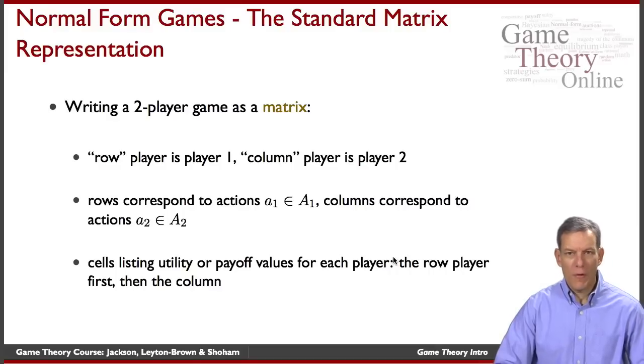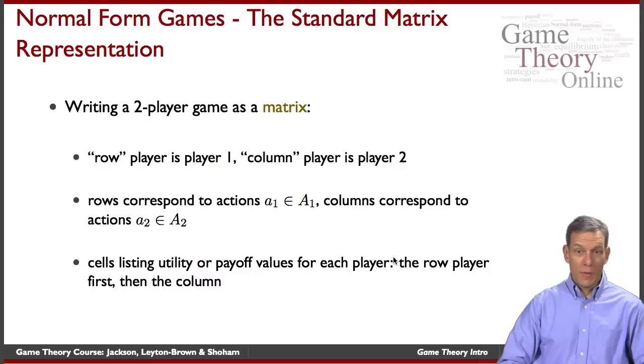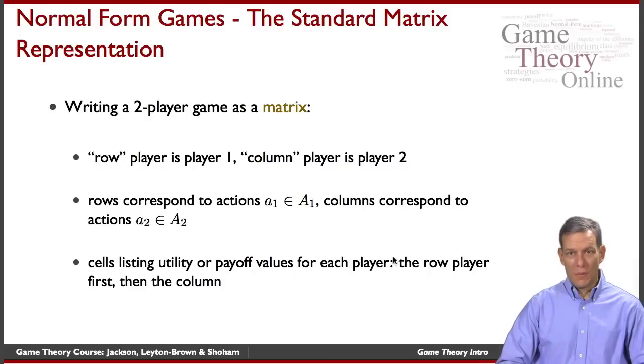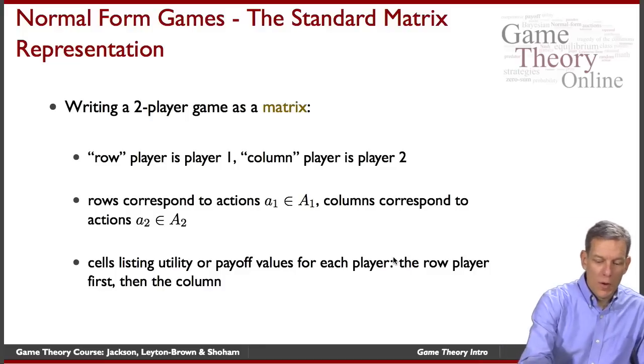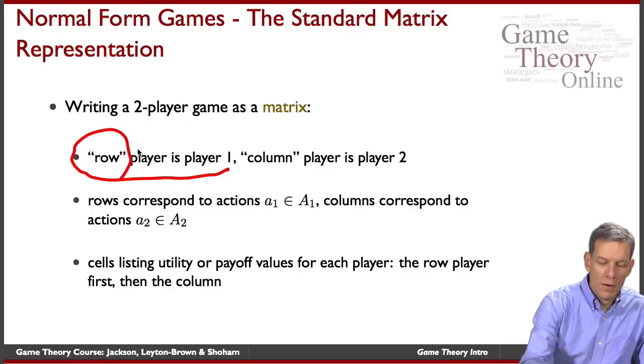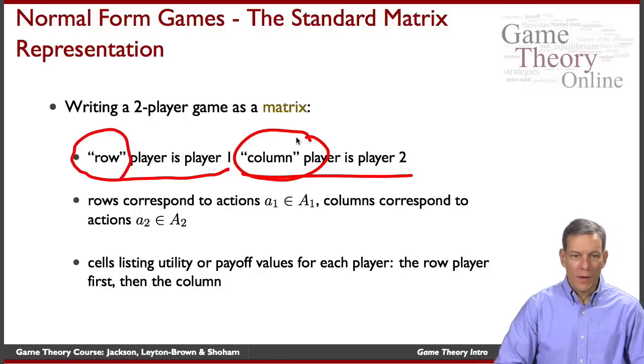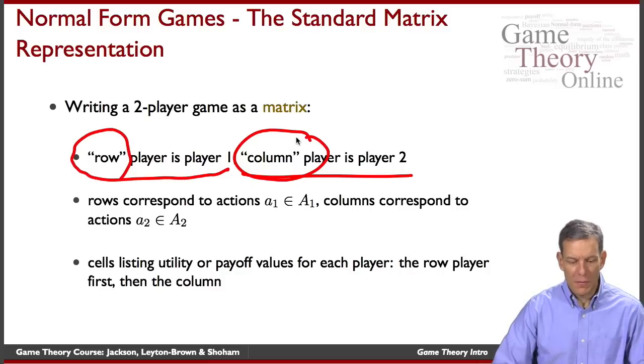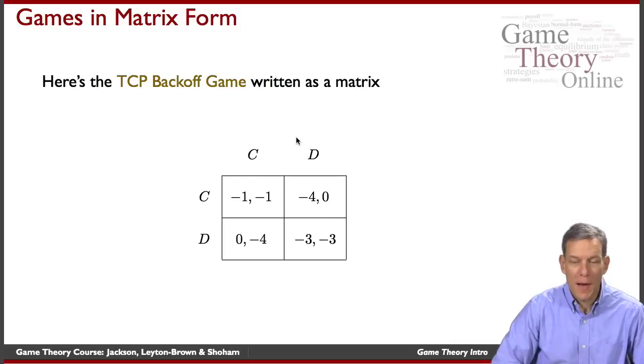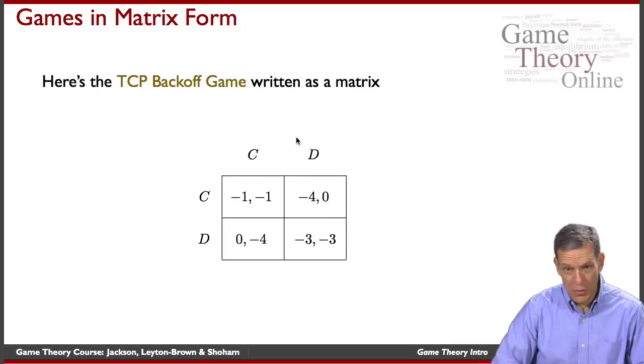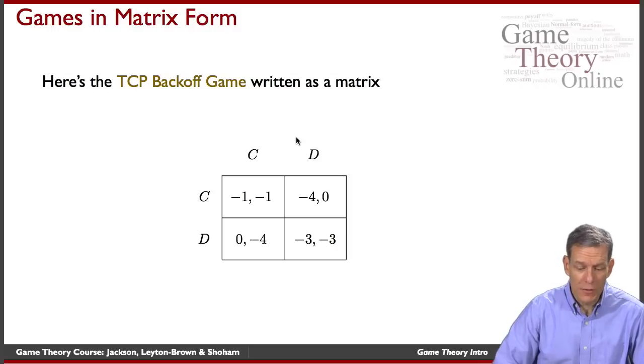Often when we represent normal form games, a very simple way of doing that is just in the matrix representation. Let's look at the most standard representation of very simple games: writing a two-player game as a matrix. We'll have player one as the row player and player two will be the column player, so they're going to choose actions that will be represented in the column of the matrix and the cells inside will represent the payoffs. For instance, the TCP backoff game that was talked about in the earlier video can be written as a matrix.